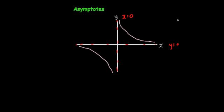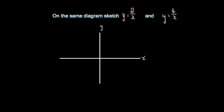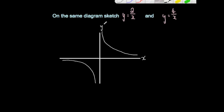So that's what the graph 1 over x would look like. If you were to do 2 divided by x, well, if you do 2 divided by 0.1 you get 20; 2 divided by 0.2 you get 4; 2 divided by 1 is 2. So your answers would be doubled and the graph would just move further out. Here's a typical question where you might be asked to sketch 2 over x and 4 over x on the same diagram. You would just show that your 4 over x is further out than your 2 over x.